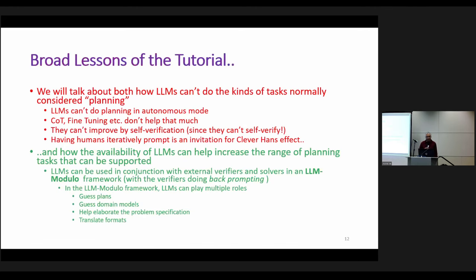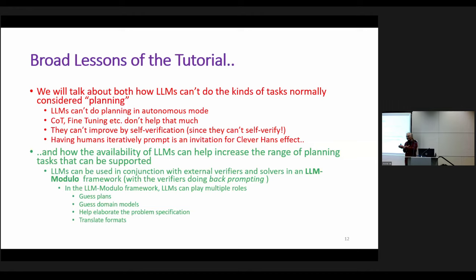Here are the broad lessons of the tutorial. The red part is all downer — LLMs can't do something. The green part is all nice — LLMs can actually be helpful. We'll talk about how LLMs can't do tasks normally considered planning. I'll show LLMs can't do planning in autonomous mode: if you ask them to solve a planning problem, they'll give something, it just won't work. If you actually try to evaluate it systematically, they're pretty bad, as we'll see.